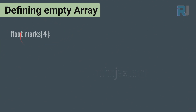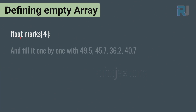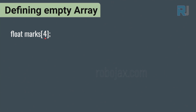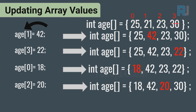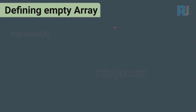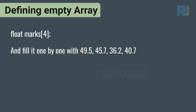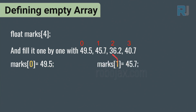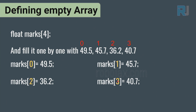We can also define an empty array. For example: float marks[4]; — it's important to put the size number in the brackets when you don't know the values upfront, because it allocates a fixed area for exactly four elements. We then fill it one by one: marks[0] = 49.5, marks[1] = 45.7, marks[2] = 36.2, marks[3] = 40.7.